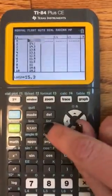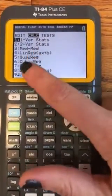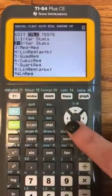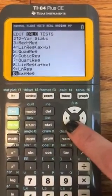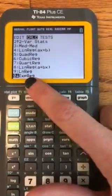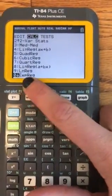Then you go to stat and choose calculate, and it's actually number 0. So I'll show you what it looks like. Normally I just push 0. It's exp reg, which means exponential regression.